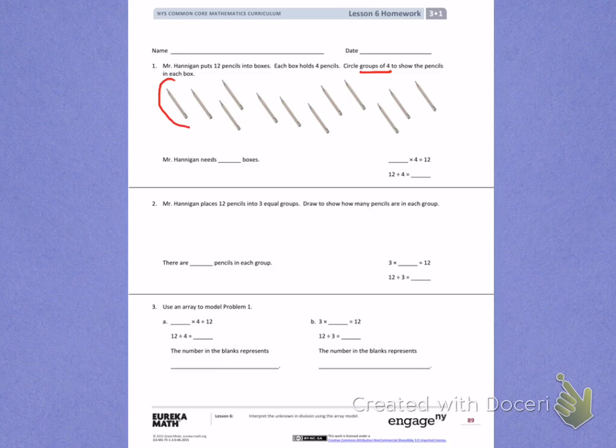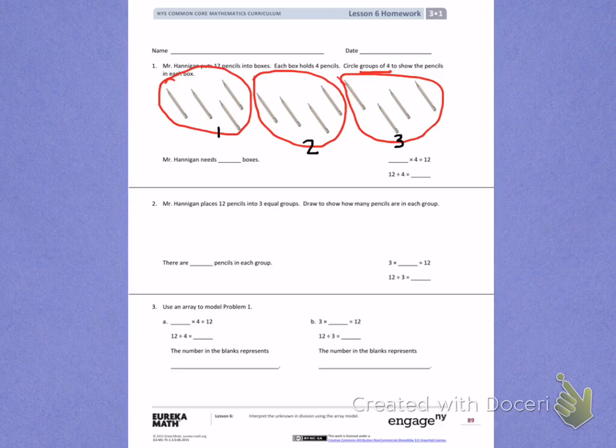So in my first circle, I'm going to circle 4 pencils to show a group of 4. Next, I'm going to circle another 4 pencils to show a group of 4. Last, I have another 4 pencils to show a group of 4. When I look at my groups, I see I have 1 group, 2 groups, 3 groups.